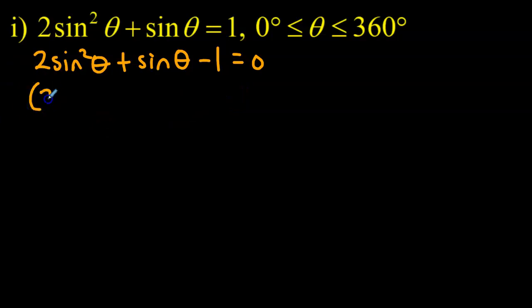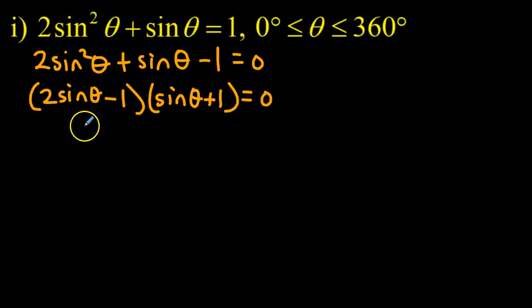If we factor this, I think it actually factors nicely. To get 2 sine squared it would have to be 2 sine theta times sine theta, and to get 1 it would have to be 1 times 1. We just have to play around with the negatives to make this work. I believe we need a negative here and a positive there. So I've got 2 sine squared theta plus 2 sine theta minus sine theta minus 1. That will give us positive sine theta.